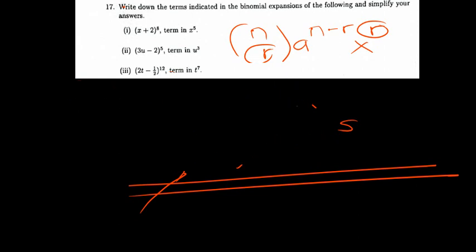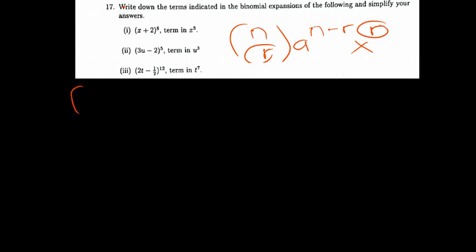Apply the same concept to the other questions — pause the video and try them. For negative 2 plus 3u raised to the power of 5, we use n choose r where n is 5, and r equals 3 for the term containing u to the power 3.